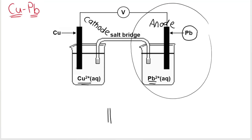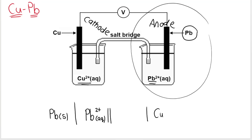Salt bridge in the middle. On the outer left end we have lead solid — my electrode — then a single line, then Pb²⁺ aqueous, the ion in contact with my anode. On the right-hand side is the cathode — copper solid as my electrode, then Cu²⁺ aqueous. Don't forget to write the standard conditions — one mole per cubic decimeter — underneath the electrolyte solutions.